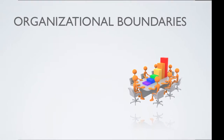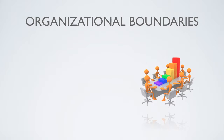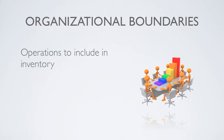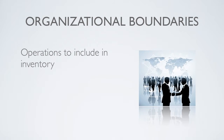Next, the company must decide which of its operations will be part of the inventory, such as subsidiaries, joint ventures, partnerships, franchises, or other operations. This part is called setting the organizational boundary.